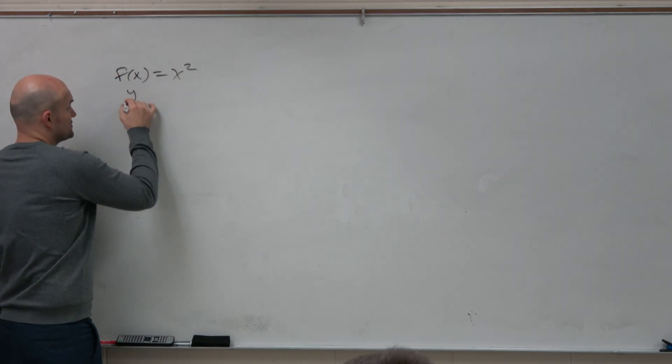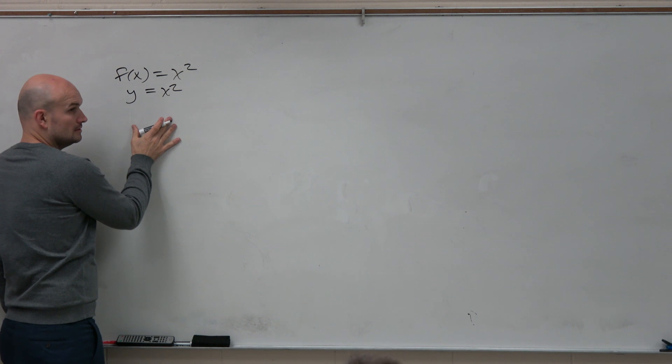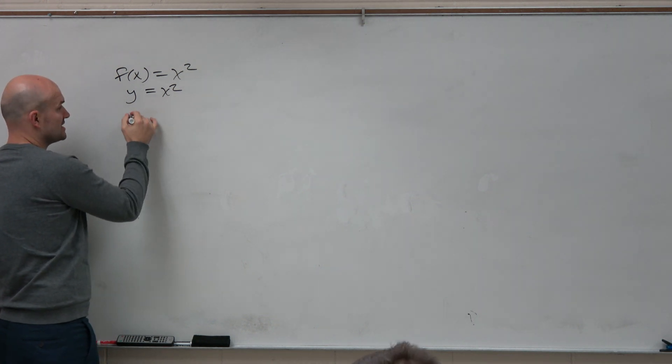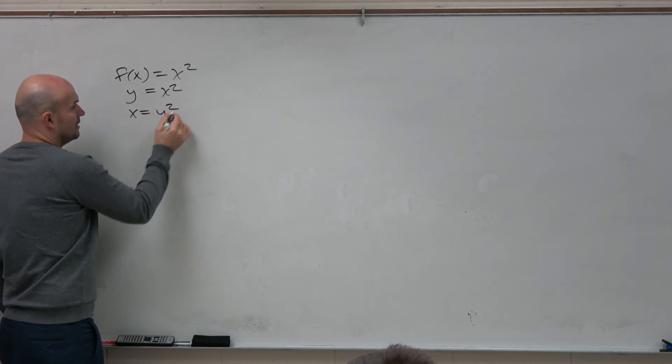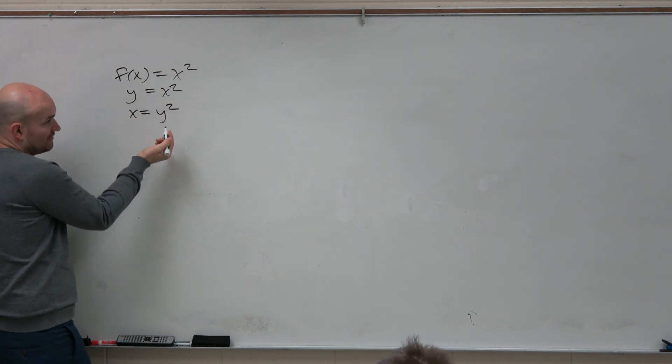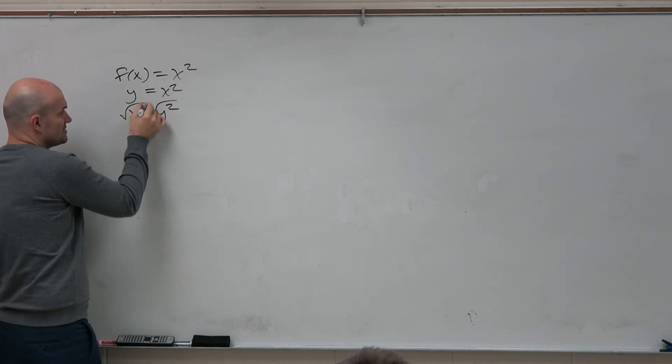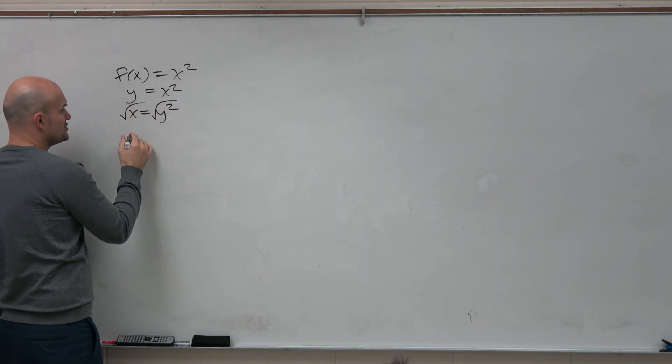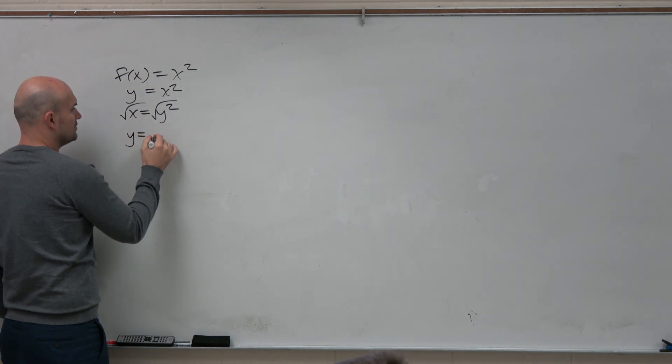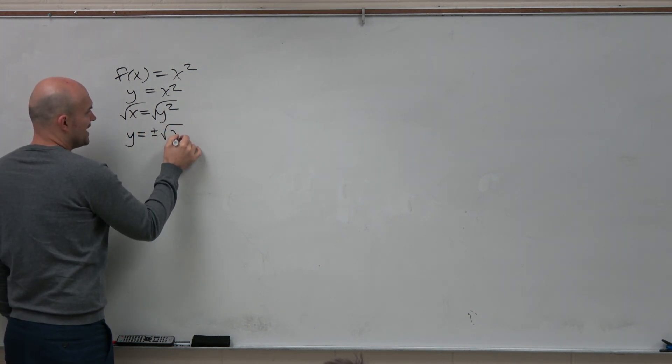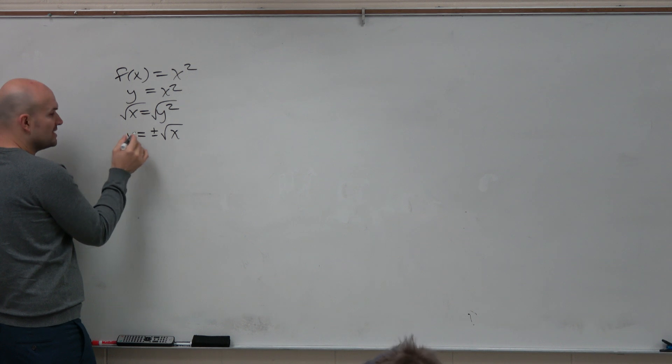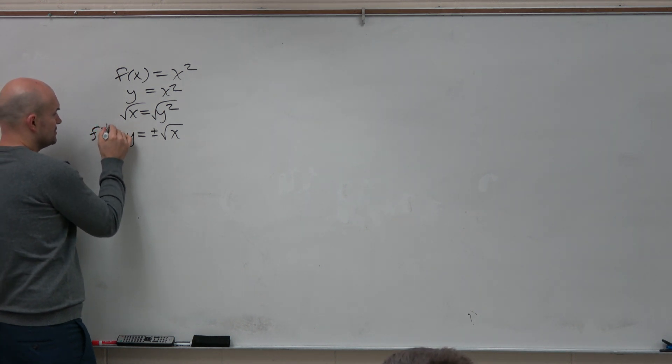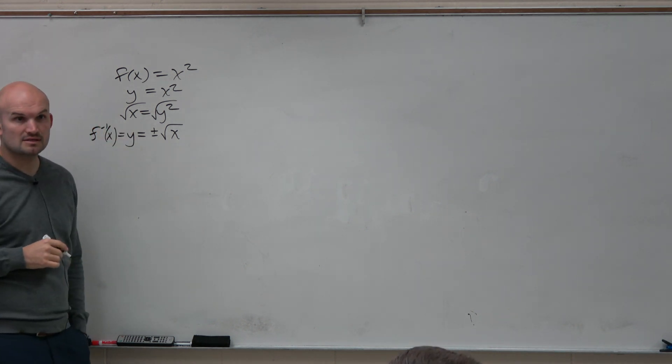remember we just swapped f of x with y, right? And then we swapped the variables x and y. And then we solve. To solve this here, we're just going to take the square root of both sides. Remember, you're introducing the square root, so you had to include both the y equals plus or minus the square root of x. And then we just make sure we replace y with our inverse notation. And that was all you had to do.